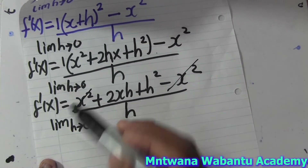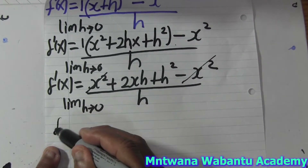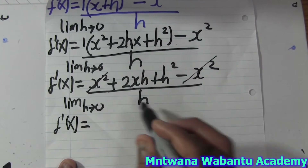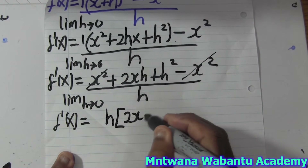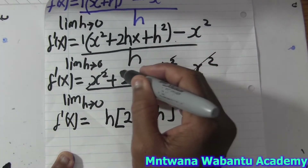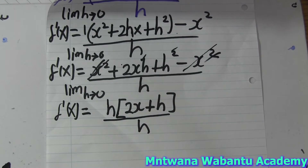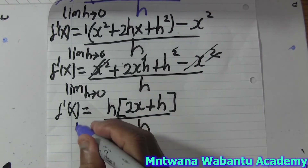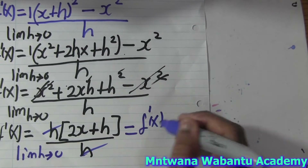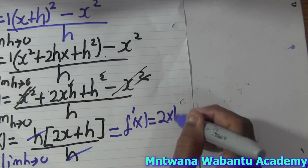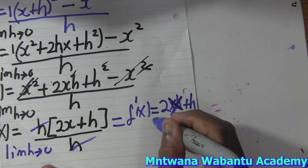You see x² and negative x² cancel each other. So what we're left with is 2xh + h². We can factor out h, leaving h(2x + h), over h. This h and that h cancel.